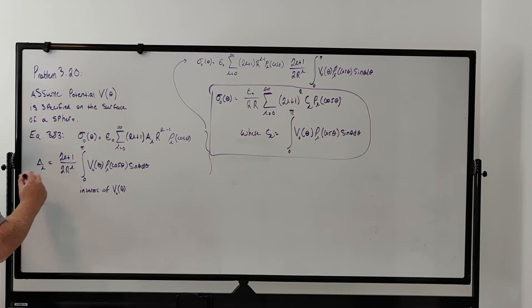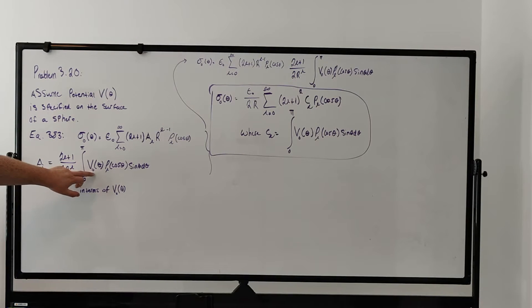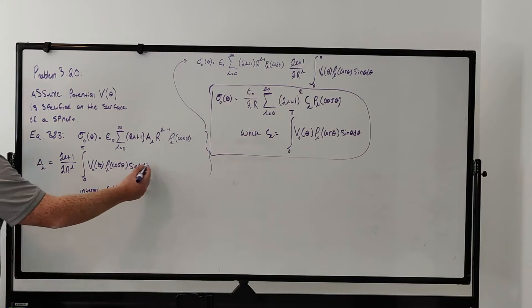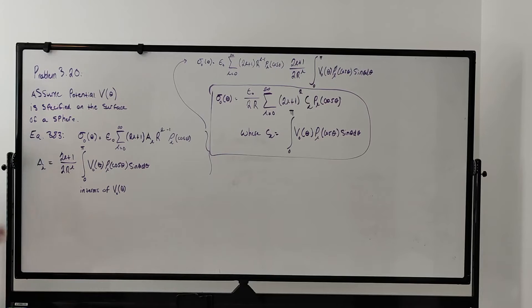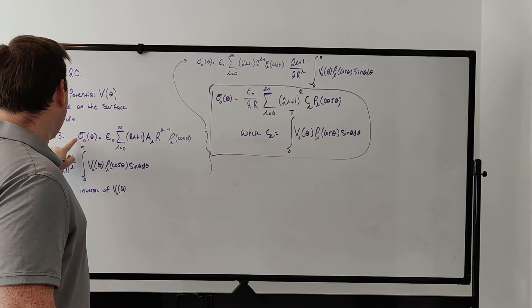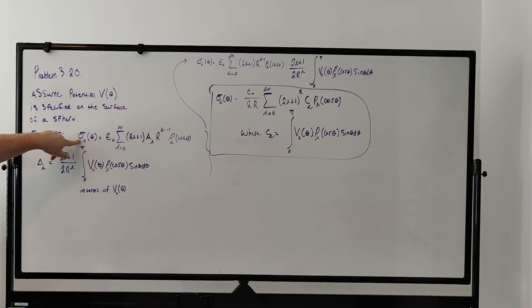A_L can be expressed this way: (2L+1)/(2R^L) times the integral of the potential, the known potential specified on the surface, times P_L(θ). Using this, we can just plug it into the equation we have for the charge density.